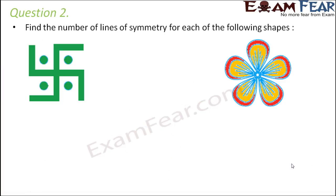Question number two: find the number of lines of symmetry for each of the following shapes. The first is the swastika symbol. If we try a vertical line, the two halves are not equal. If we try a horizontal line, the two halves are again not equal. So basically there are no lines of symmetry — the swastika symbol has zero lines of symmetry.